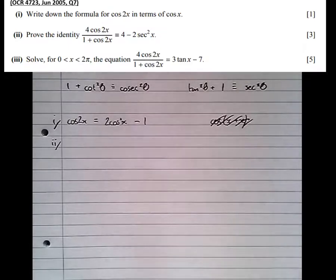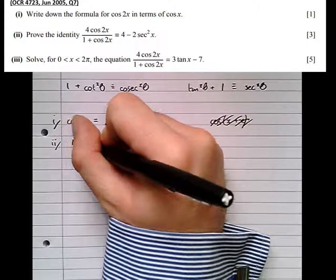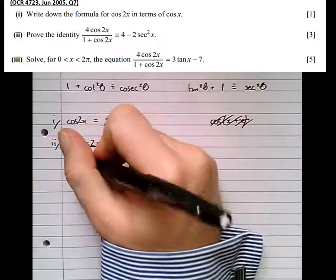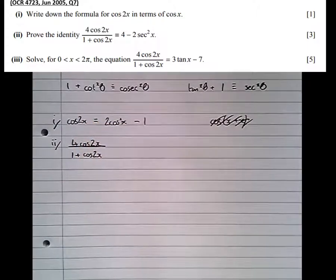So I'll cross that out for now, that one's not relevant to what we're doing now. So part 2, prove the identity, 4 cos of 2x over 1 plus cos of 2x is equal to that. So these proof questions confuse students quite a lot. What we should always do is start with the left-hand side. So let's copy that down, 4 cos 2x over 1 plus cos of 2x, and not actually refer to the right-hand side at all until the very last line.